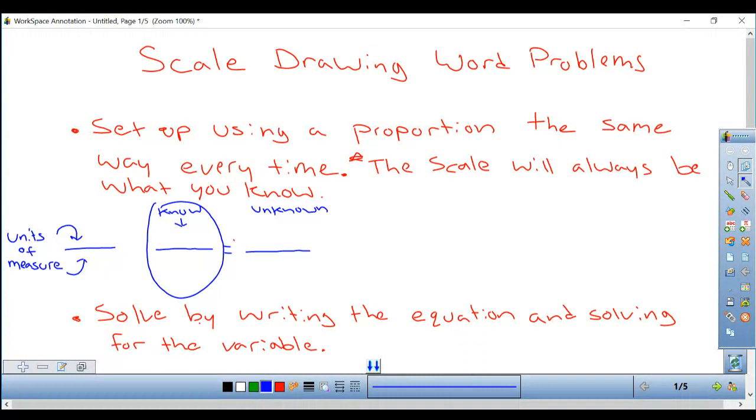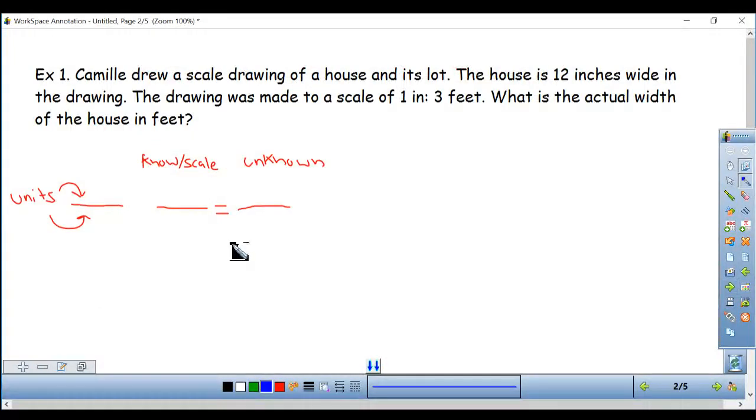So we're going to do the first one together. I've got it pre-set up. We've got our units, what we know or our scale in the middle, and then our unknown on the right. And our unknown means that I'm given one piece of information but not the second. So the question is: Camille drew a scale drawing of a house and its lot. The house is 12 inches wide in the drawing. The drawing was made to a scale of one inch is three feet. What is the actual width of the house in feet? So anytime I come across a word problem I'm looking for this word 'scale.' And whenever it comes before or after that, if it gives me the scale, that is perfect because that is exactly what I know and that's how I want to start my proportion. I know it says this was made to a scale of one inch is three feet. That's exactly what I'm going to put. And it doesn't matter if I put three on top or one on top, but I'm just going to go ahead and keep it in order. One inch is three feet.